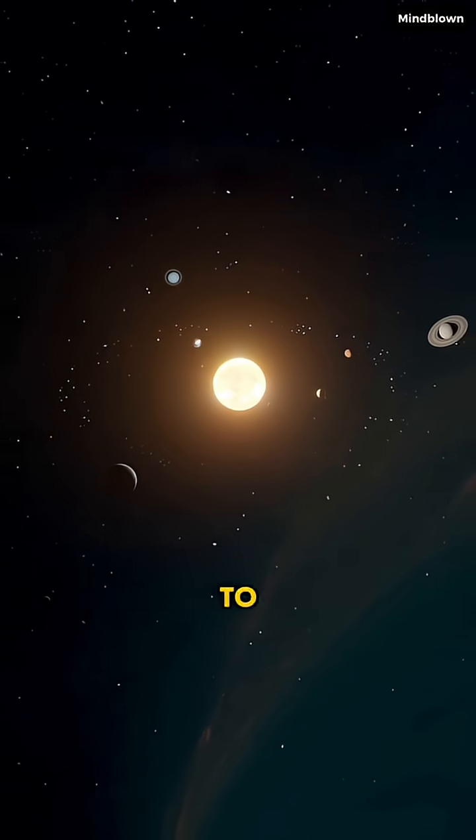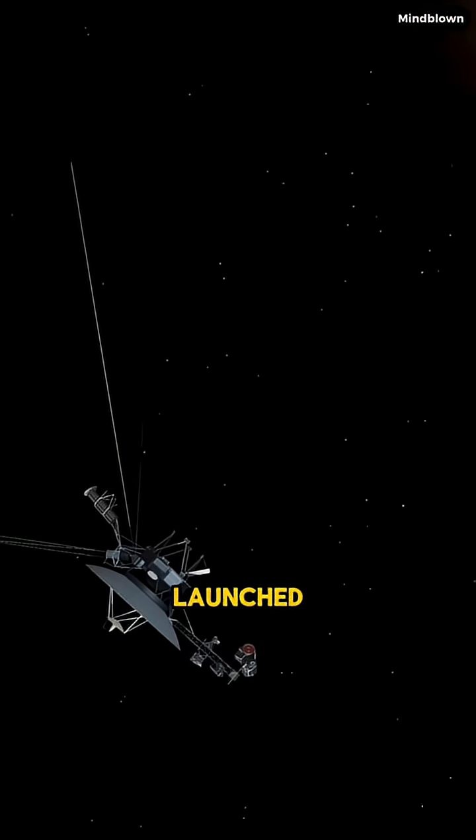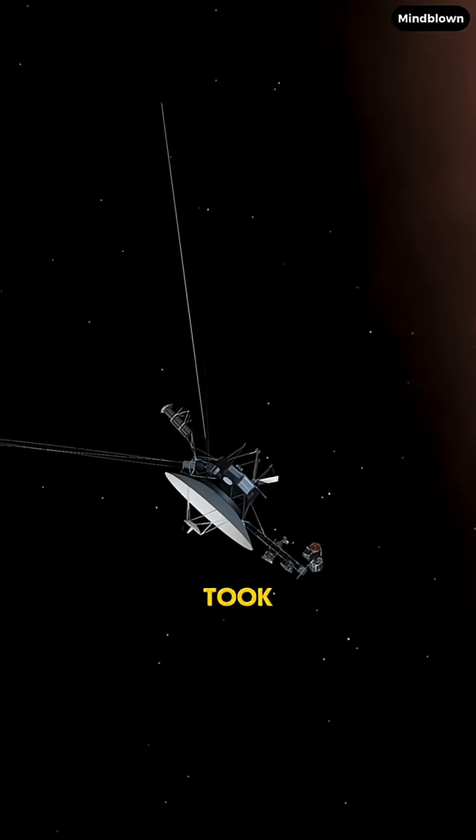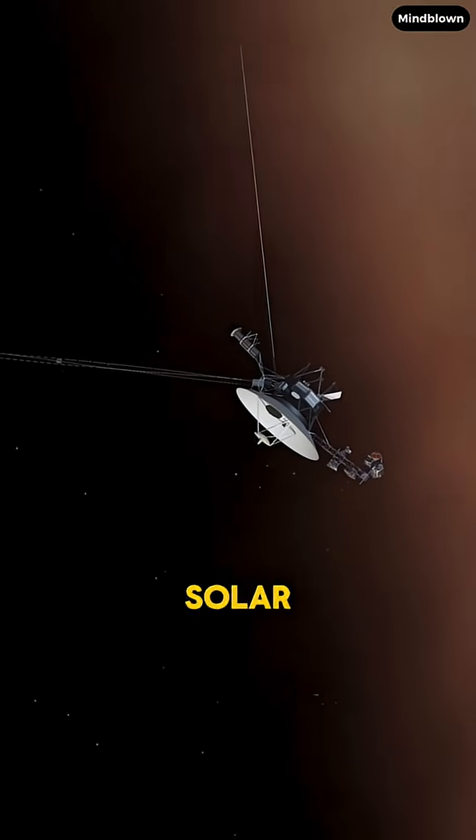The fastest spacecraft to ever cross this boundary, Voyager 1, launched in 1977 and took 35 years to finally leave our solar system in 2012.